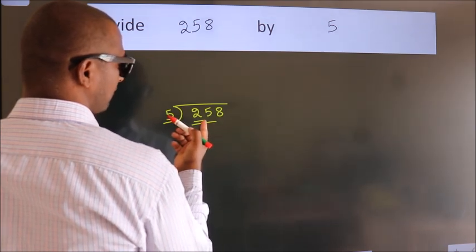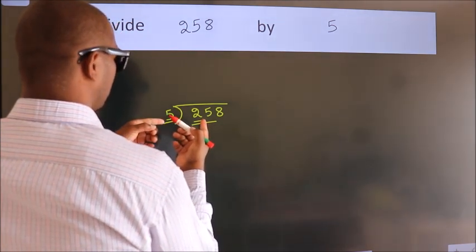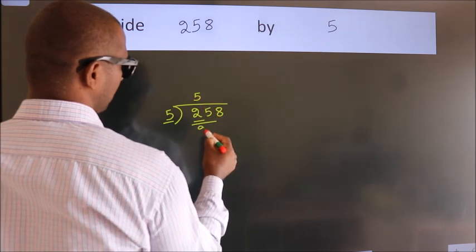When do we get 25? In the 5 table. 5 fives, 25.